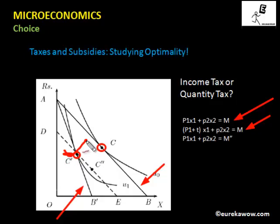We want to examine whether income tax will leave the consumer on a higher indifference curve compared to the quantity tax. The bundle C' is affordable under income tax because it lies on the dotted budget line, which represents P1·X1 + P2·X2 = M''. This dotted budget line is a parallel inward shift of the original budget line AB.